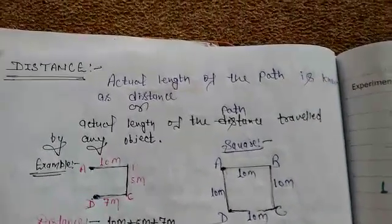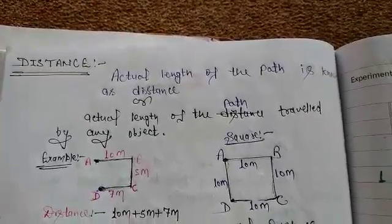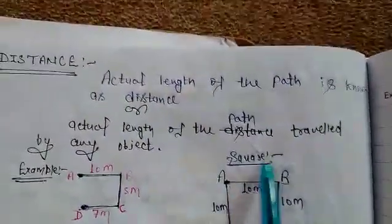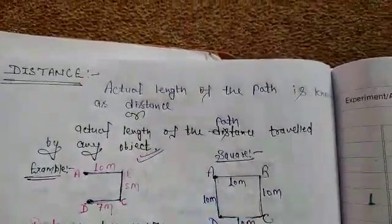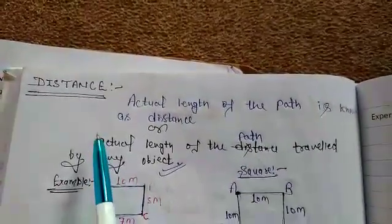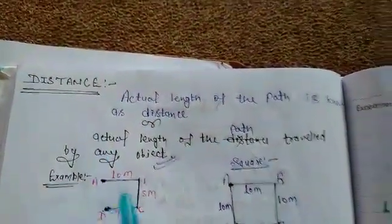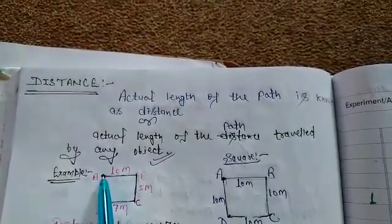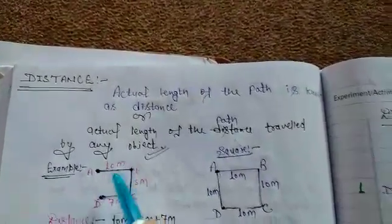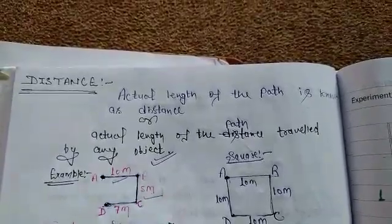Now let's discuss distance and displacement. What is distance and what is displacement? According to the definition of distance: the actual length of the path traveled by any object is known as distance. Suppose an object starts from A to B, B to C, C to D. Distance A to B is 10 m, B to C is 5 m, C to D is 7 m. The total distance is 22 meters.